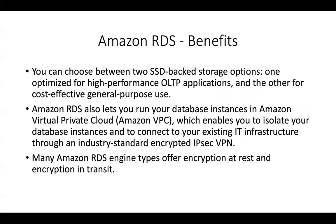You can choose between two SSD-backed storage options: General Purpose SSD for optimized storage, or Provisioned IOPS SSD for high performance. RDS runs within your VPC — you specify your VPC and a subnet group. There is also an option group concept used to enable your RDS to talk to other AWS services. You can also connect your existing IT infrastructure using a standard encrypted IPsec VPN connection. Many RDS engine types offer encryption at rest and in transit.